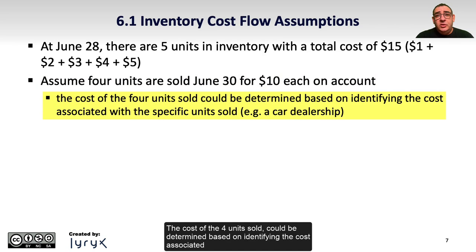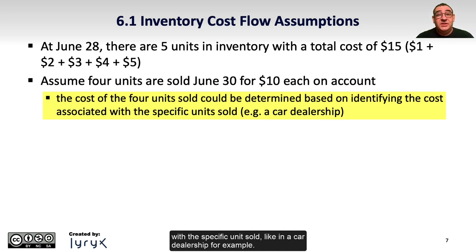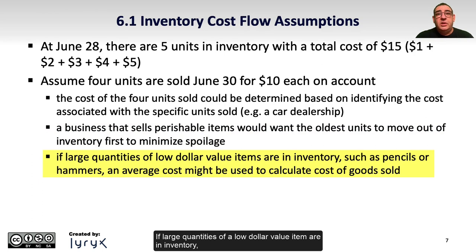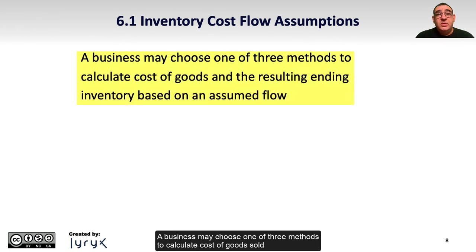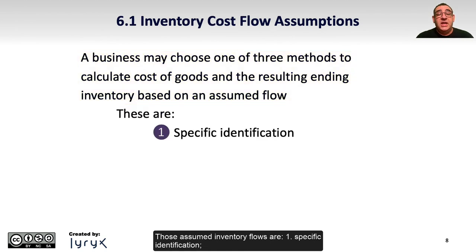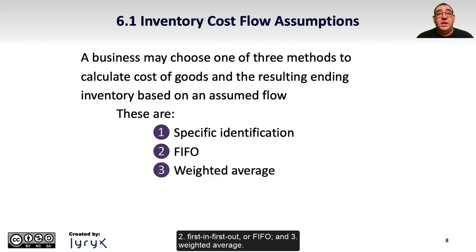The cost of the 4 units sold could be determined based on identifying the costs associated with the specific units sold, like in a car dealership. A business that sells perishable items would want the oldest units to move out of inventory first to minimize spoilage. If large quantities of a low dollar value item are in inventory, such as pencils or hammers, an average cost might be used. A business may choose one of three methods: 1) specific identification, 2) first-in first-out or FIFO, and 3) weighted average.